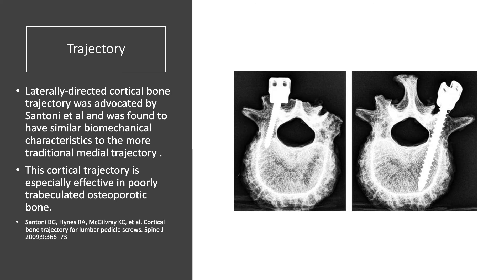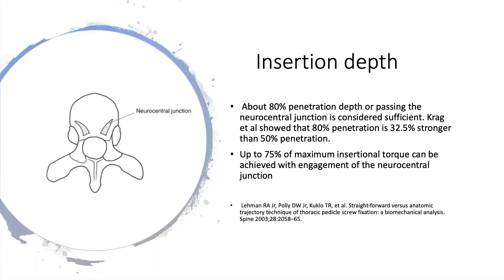The cortical bone trajectory is especially effective in poorly trabeculated osteoporotic bone. Regarding insertion depth, about 80% penetration depth — or passing the neurocentral junction — is considered sufficient. Studies show that 80% penetration is 32% stronger than 50% penetration, and up to 75% of maximum insertional torque can be achieved with engagement of the neurocentral junction.